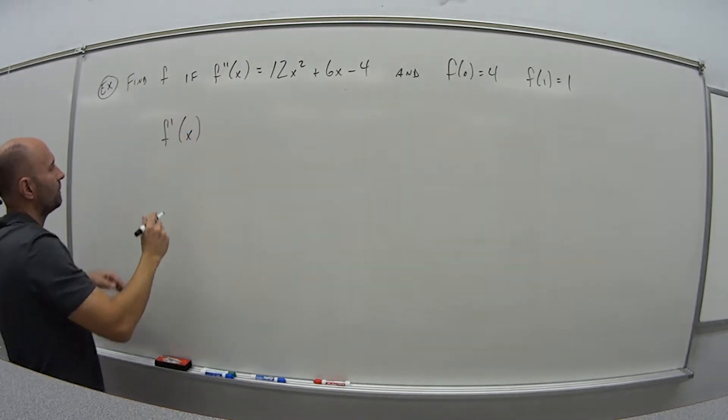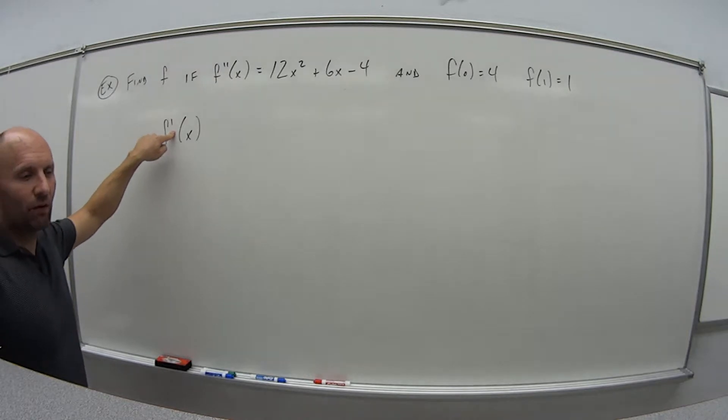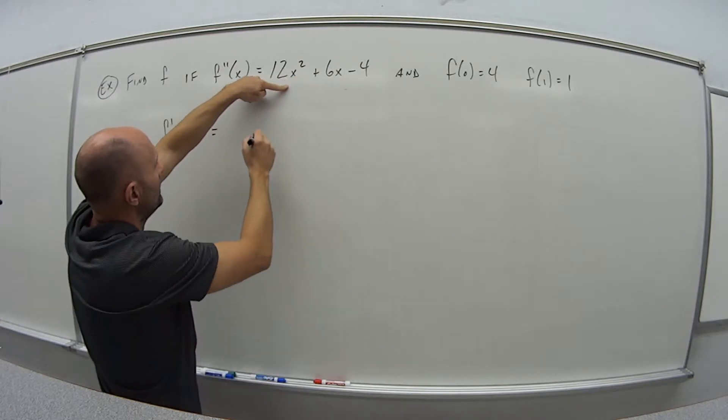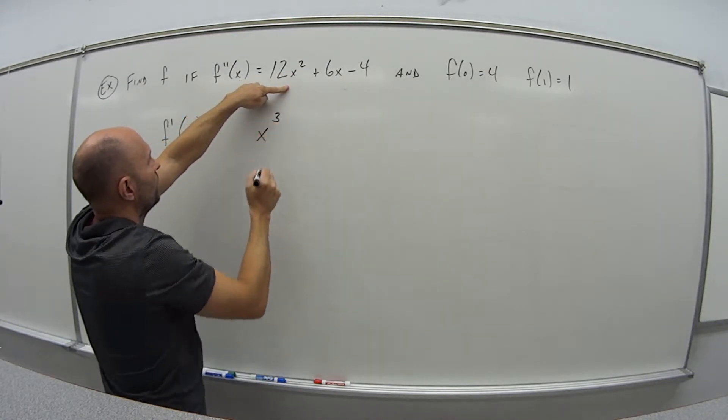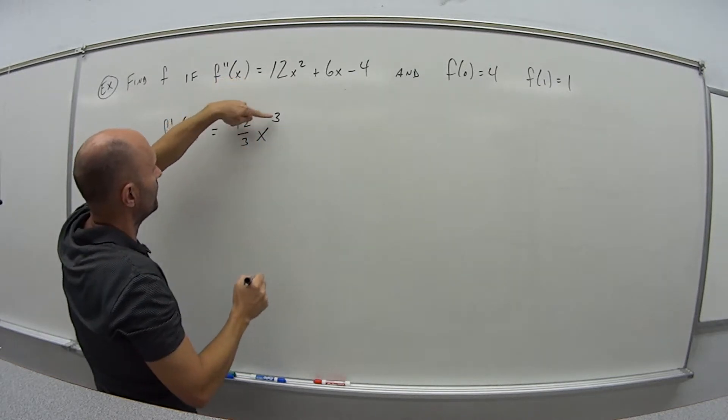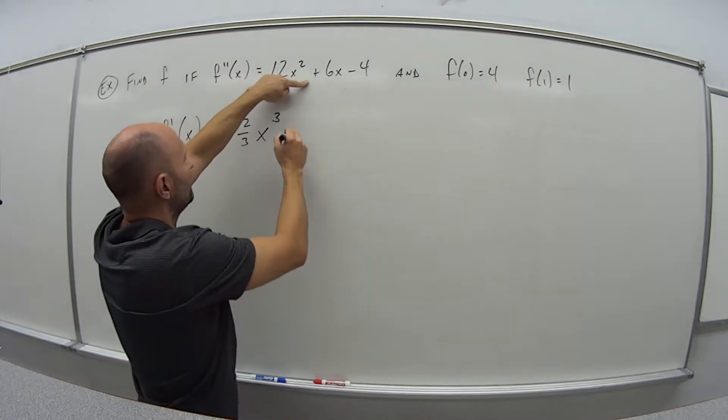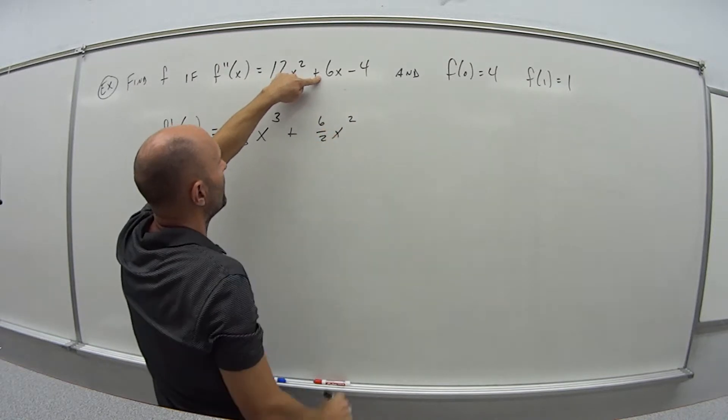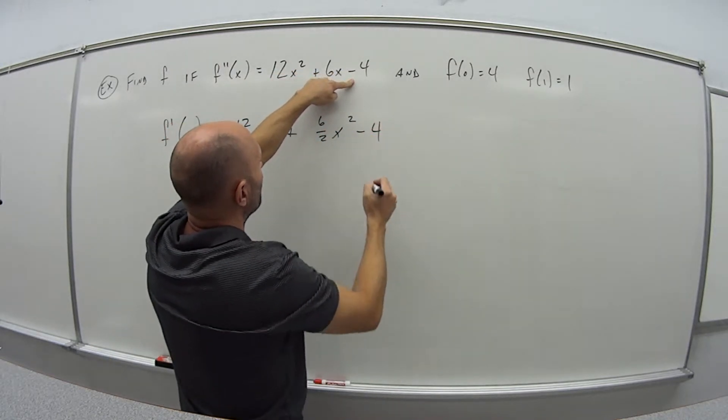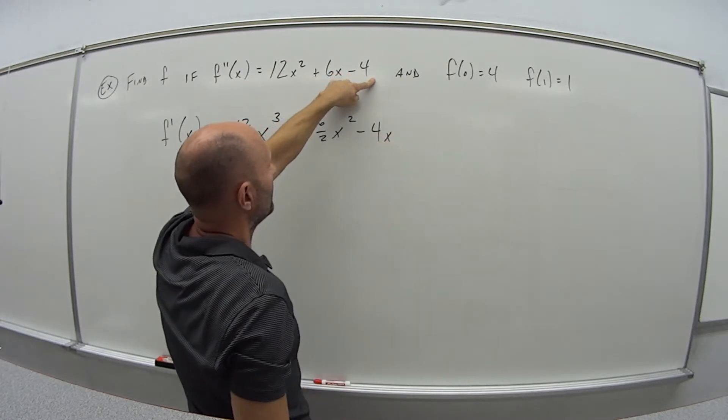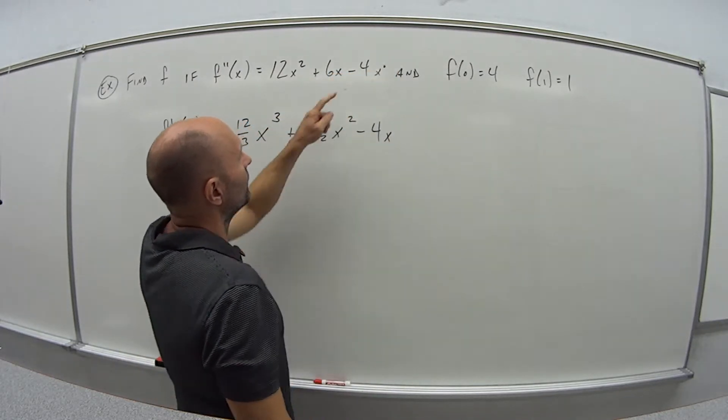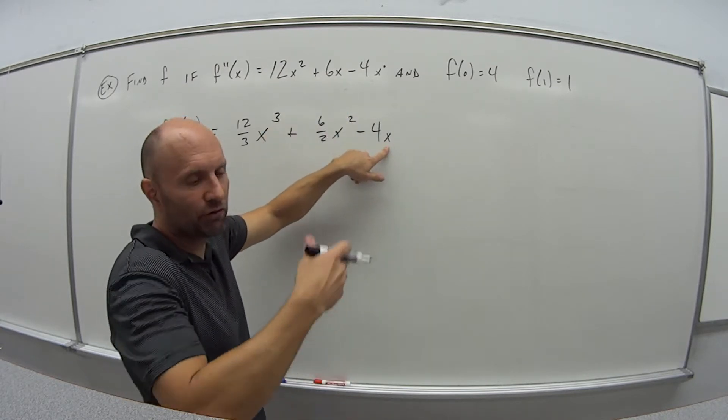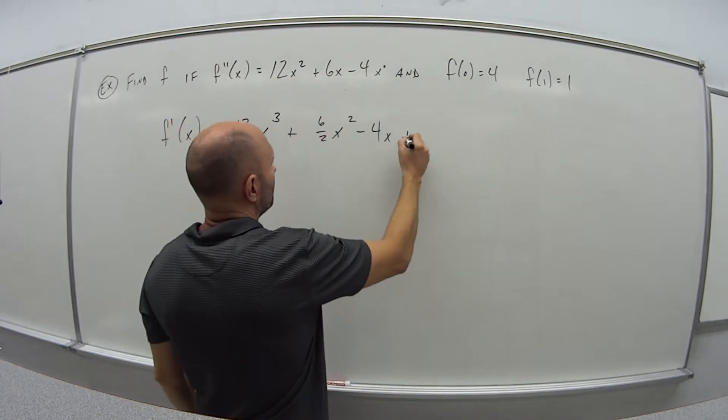So let's work this guy. So f double prime is this, so that means if we're going up one step, or one level, that means we're first finding out f prime. So we do the same process. I have x squared here, so I'm going to add 1 in the exponent. 2 plus 1 is 3. And then divide the coefficient by that new exponent, 12 over 3. Same thing here. I have x to the first, so I'm going to make it 2. And then 6 divided by 2. And then minus 4. There was no x here, so now I put 1 in. This is like x to the 0. So add 1, I get x to the first. So if I have just a constant, then when I take the antiderivative, it just puts that x back in, plus c.